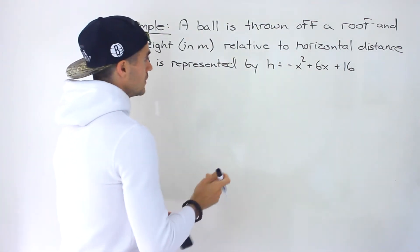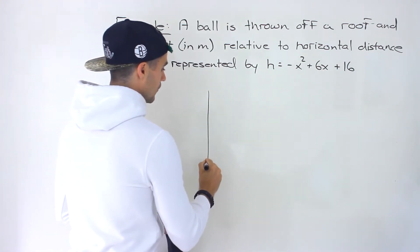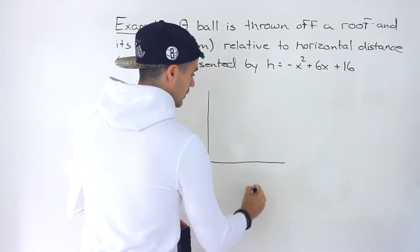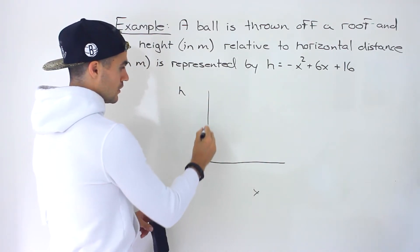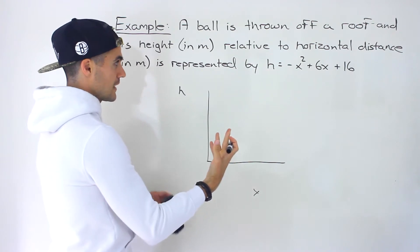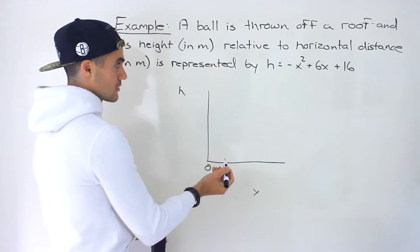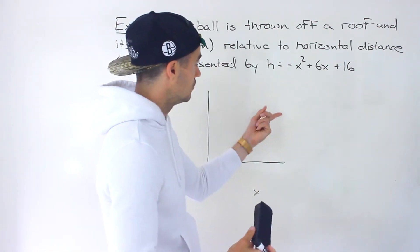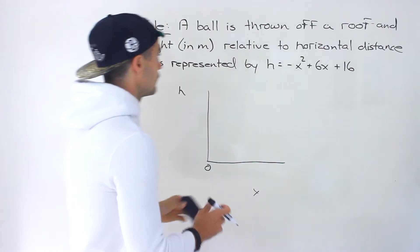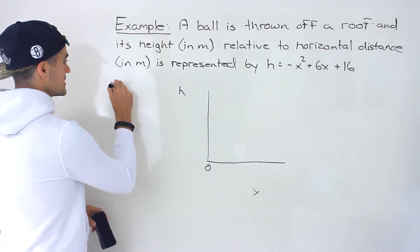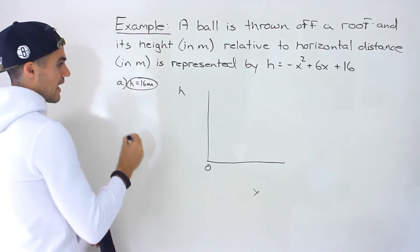So the first question is at what height is the ball thrown off of? Well notice this is x, this is h here. It's going to be thrown off the roof - that's going to be the initial height. And so that's going to happen when x is going to equal 0. And so if we plug in 0 for x, notice that both of those terms would go to 0 and we would just be left with a height of 16 meters.